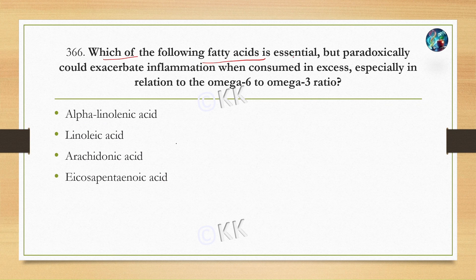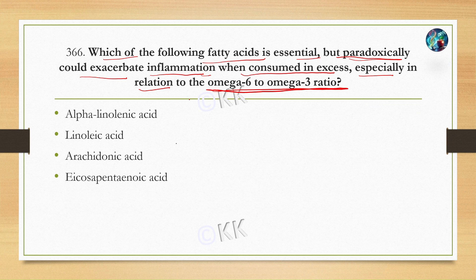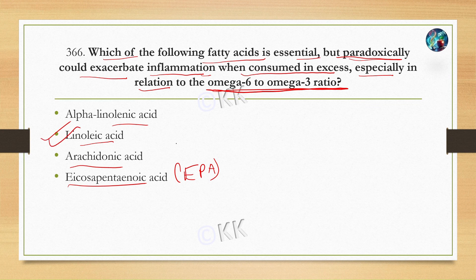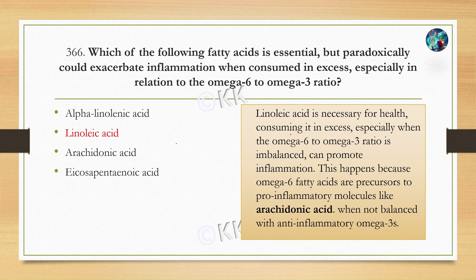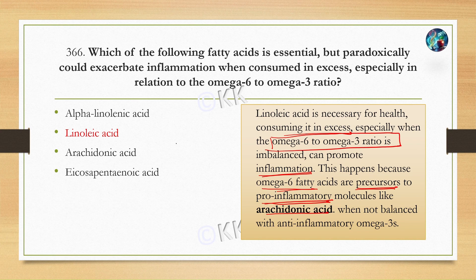Which of the following fatty acids is essential but paradoxically could promote inflammation when consumed in excess, especially in relation to the omega-6 to omega-3 ratio? Option A: Alpha-linolenic acid. Option B: Linoleic acid. Option C: Arachidonic acid. Option D: Eicosapentaenoic acid. The correct option is option B — linoleic acid. Linoleic acid is necessary for health, but excess consumption may lead to an imbalance of the omega-6 to omega-3 ratio, which can promote inflammation. This occurs because omega-6 fatty acids are precursors to pro-inflammatory molecules like arachidonic acid, especially when not balanced with anti-inflammatory omega-3 fatty acids.